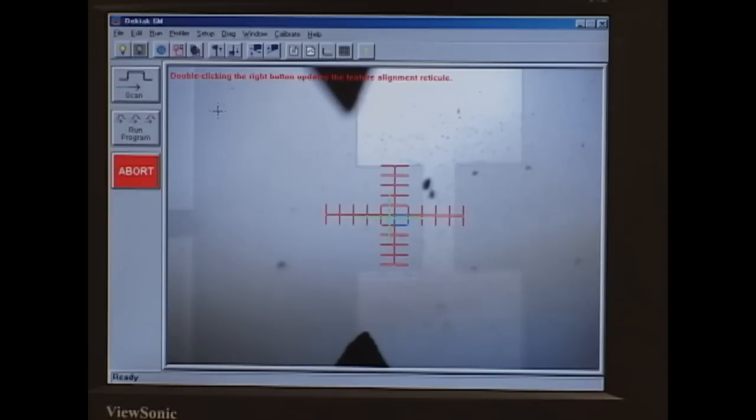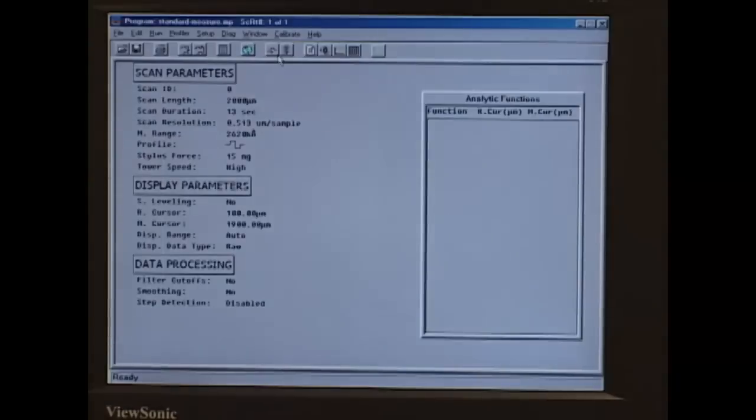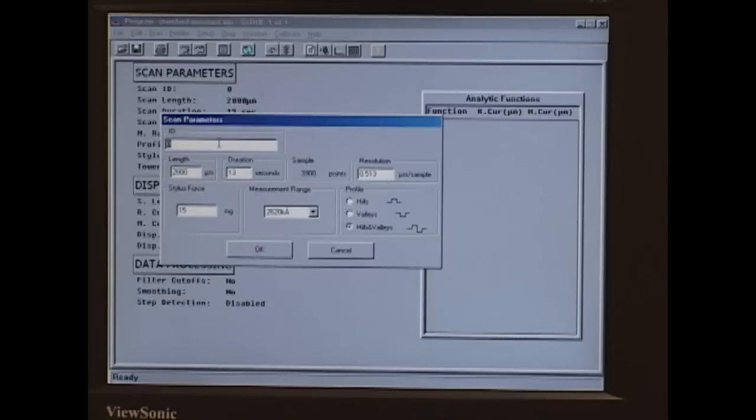So the next step would be go to the Window tab, click on Scan Routines. And this is where we can change the parameters for our scan. We'll enter an ID, the length of the scan, the duration of the scan. Changing those two parameters will also automatically change the resolution. And the force of the stylus we can change based on what kind of sample we have. If we have a soft sample, we'll want to use a low force. And if we have something like a hard sample, we know we aren't going to damage it, so we can use a higher force and then we will get better resolution.